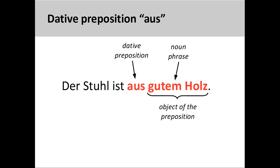The preposition aus is used to describe the material out of which an object is made or constructed. For example, der Stuhl ist aus gutem Holz — the chair is made of good wood. Here there is no definite article in the noun phrase, but the dative case is indicated by the strong adjective ending -em.